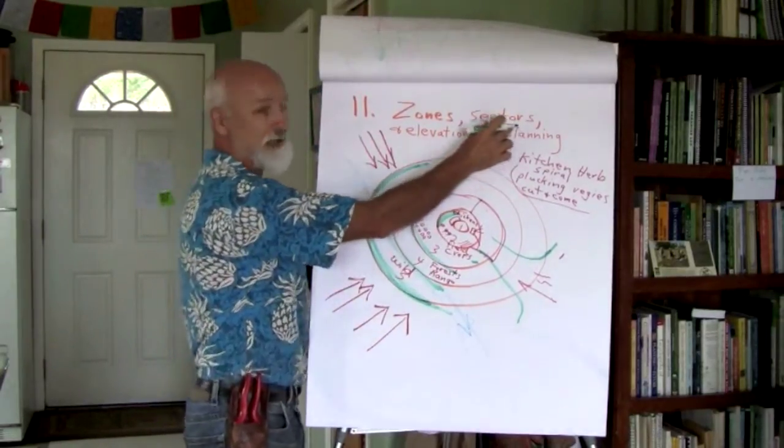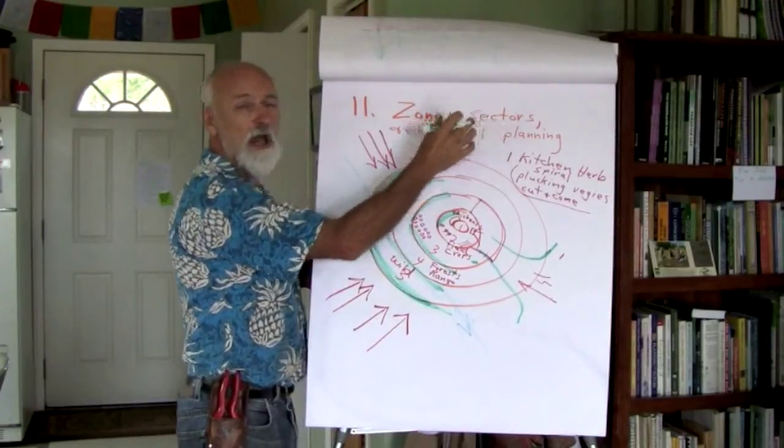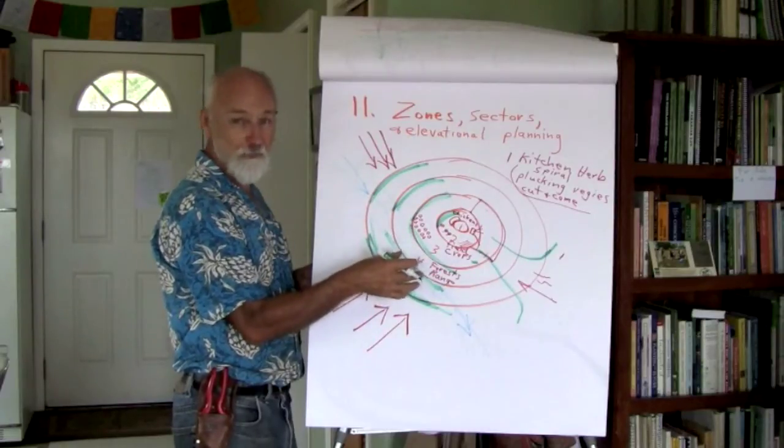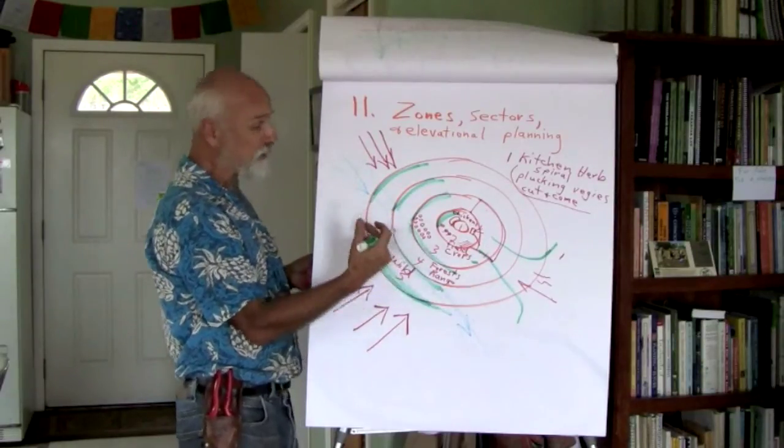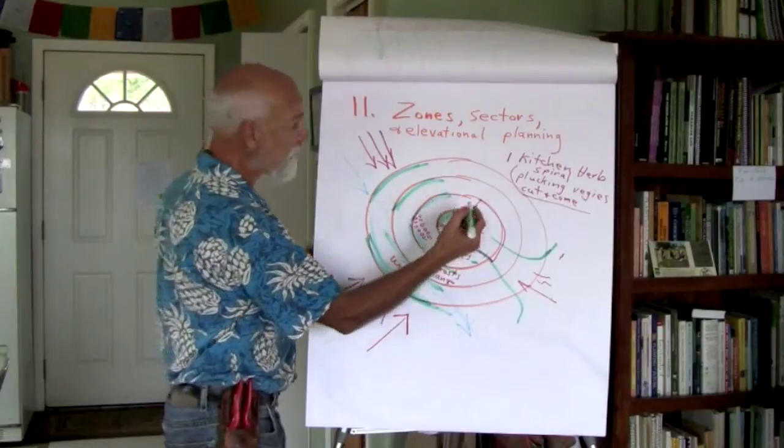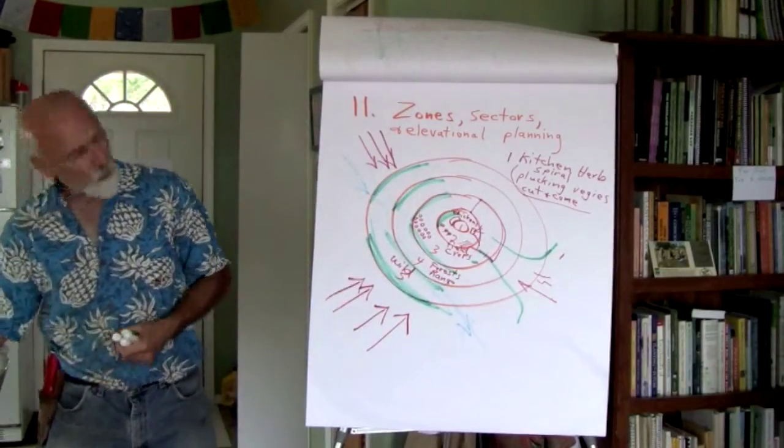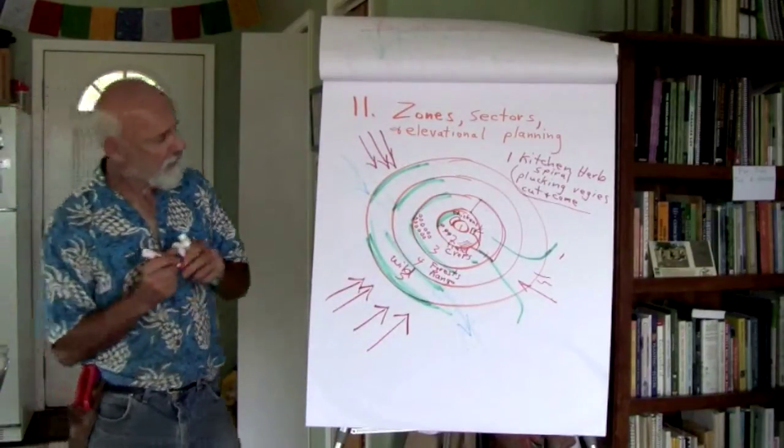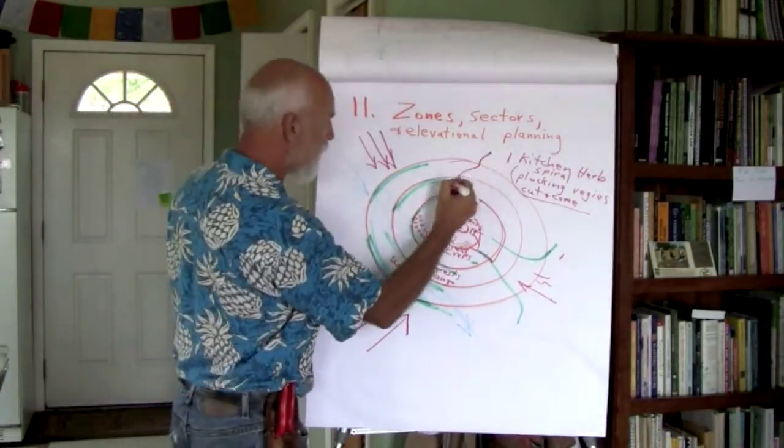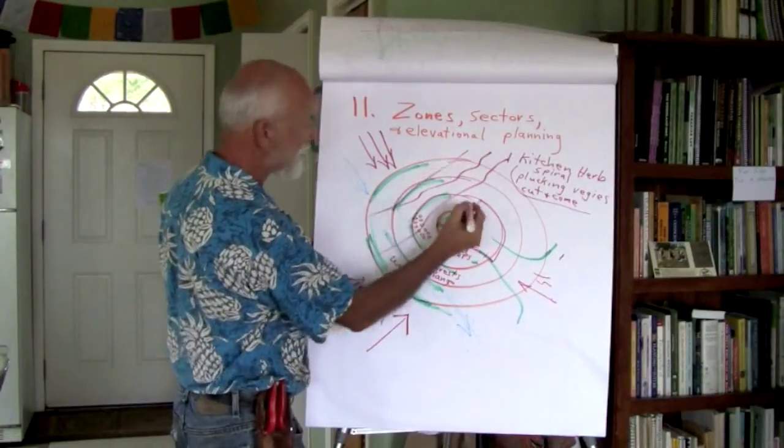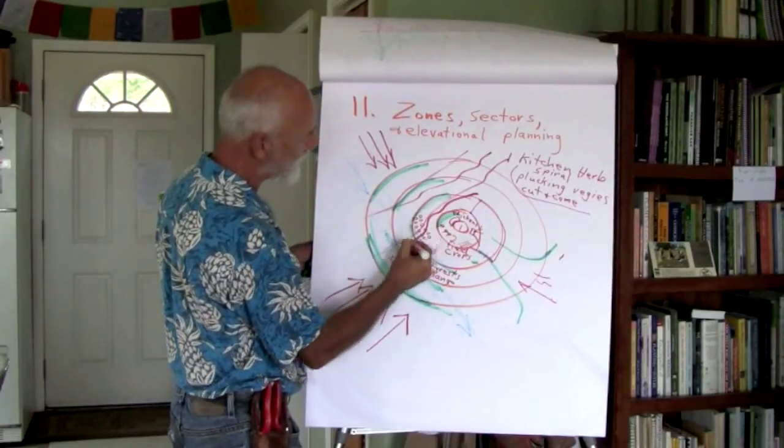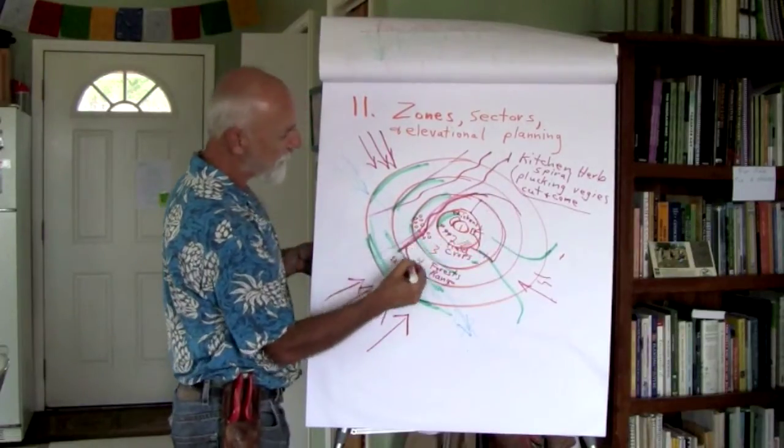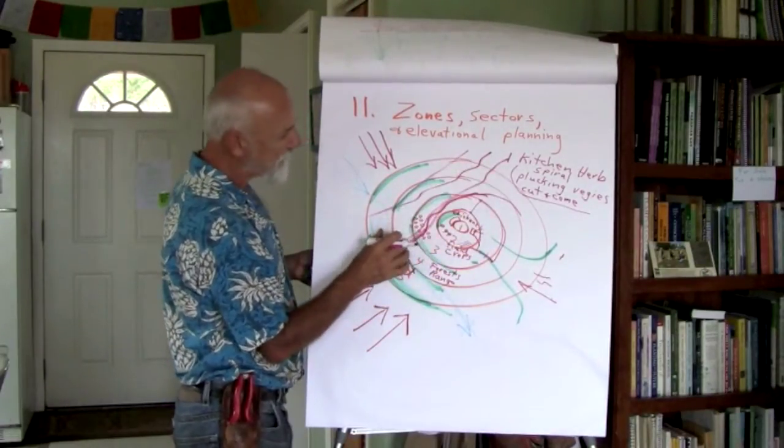And we might want a whole series of wind breaks and hedgerows coming in this way here for our wind sector here. So we not only look at the energies, we talk about how do we design to benefit or to mitigate against the harmful effects or to bring in the good effects. We might have a wildlife corridor sector. And we might have a lot of deer that wander through this way. So we might have a deer sector.